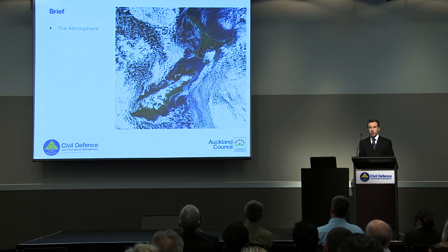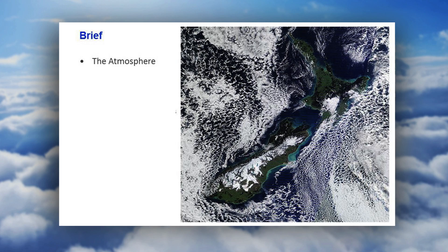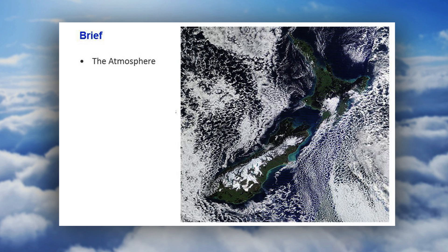I'm going to describe a bit about the atmosphere and how it varies with altitude, because I think that's quite important to understand, and touch on the global circulation system and how that influences cyclone systems.